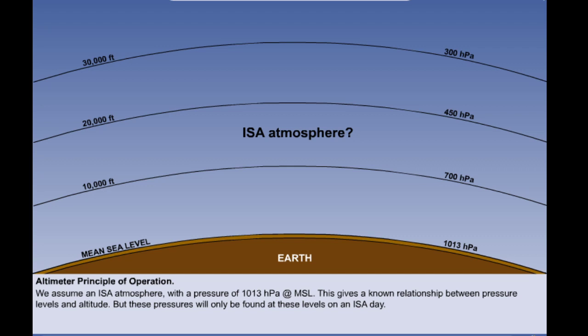It would be very unusual to have a day which is exactly the same as the ISA atmosphere when you fly. This standard atmosphere is an average for all regions in the world from tropical to polar and all seasons of the year hot or cold. Therefore the altimeter is extremely unlikely to read your true altitude. This may be for one or two reasons. Firstly, even if the temperature distribution as you climbed were precisely as specified in ISA, the sea level pressure might not be 1013 hectopascals. Sea level pressure usually varies between about 950 and 1050 hectopascals and is seldom the same from day to day.